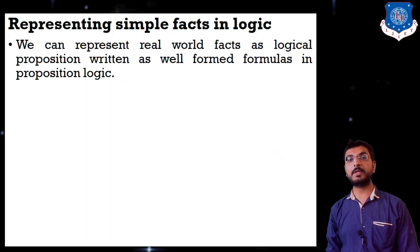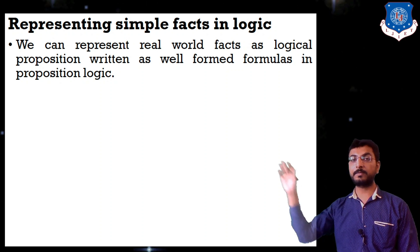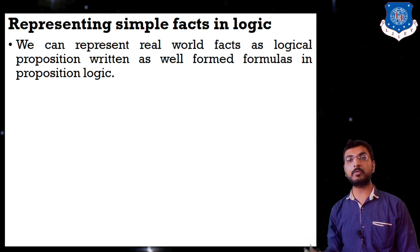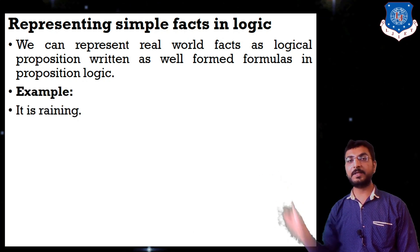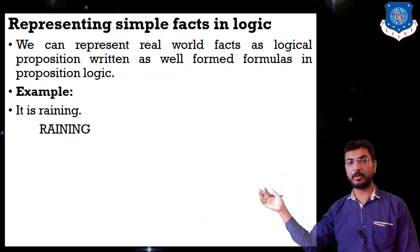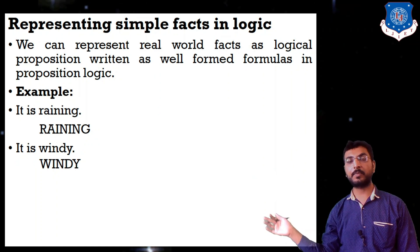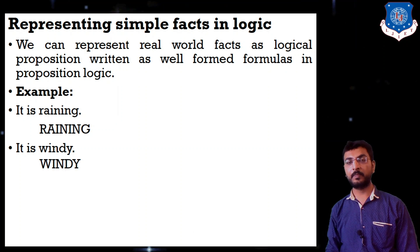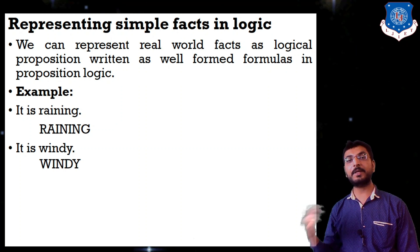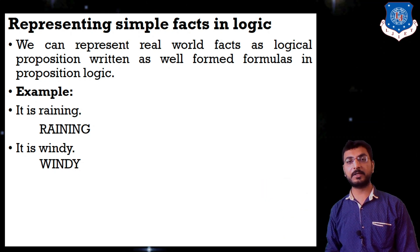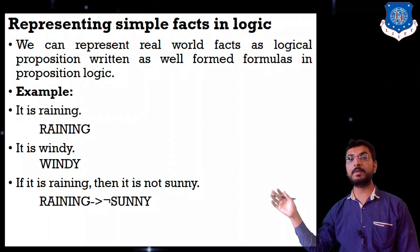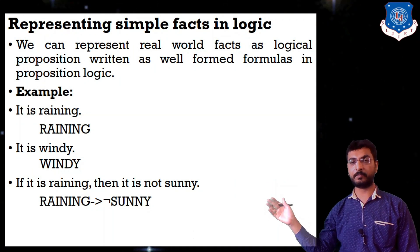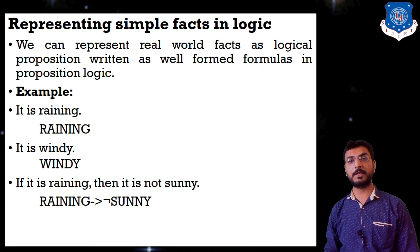We can represent real world facts as logical propositions written as well-formed formulas in proposition logic. The first way to represent a fact is using proposition logic. For example, the fact 'it is raining' is represented as RAINING. 'It is windy' is represented as WINDY. There is one convention in proposition logic: representation should be done in uppercase letters only. Third, 'if it is raining then it is not sunny' is represented as RAINING implies NOT SUNNY.